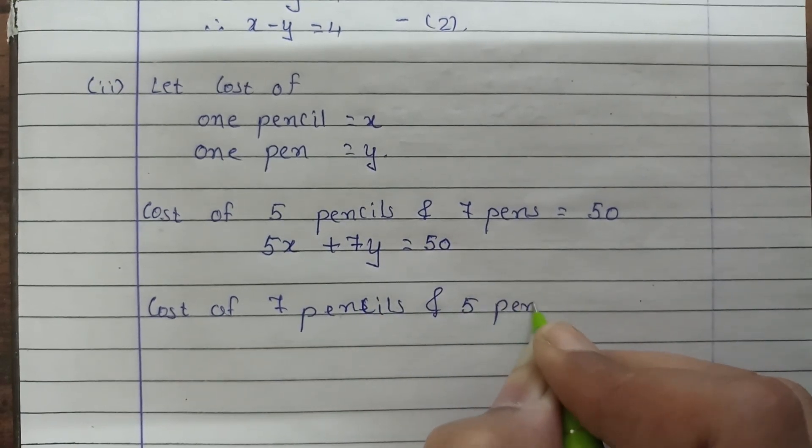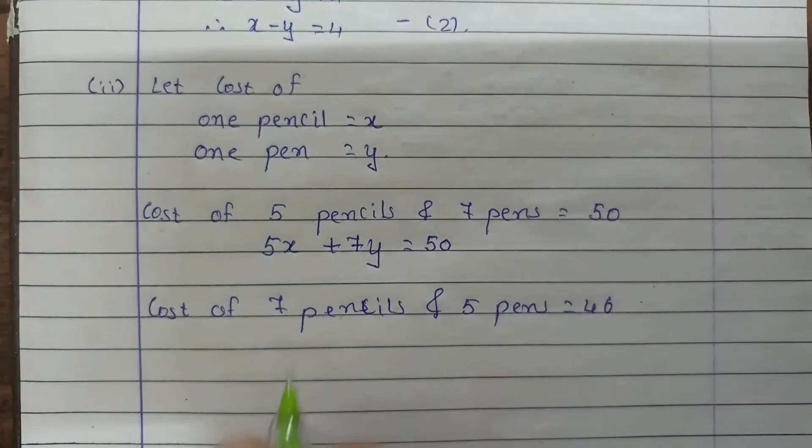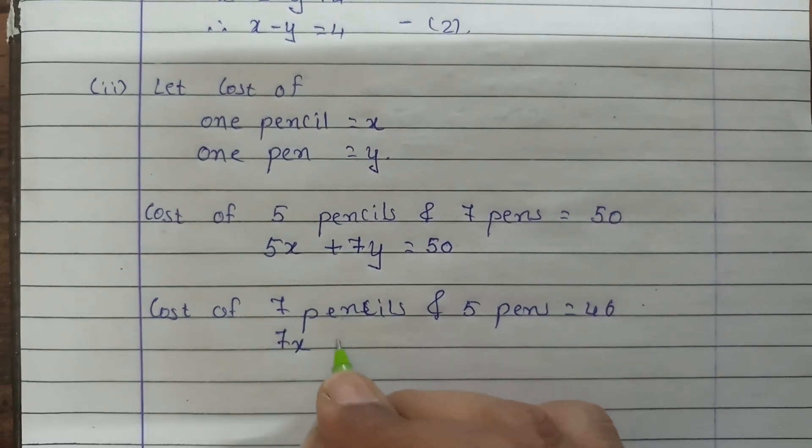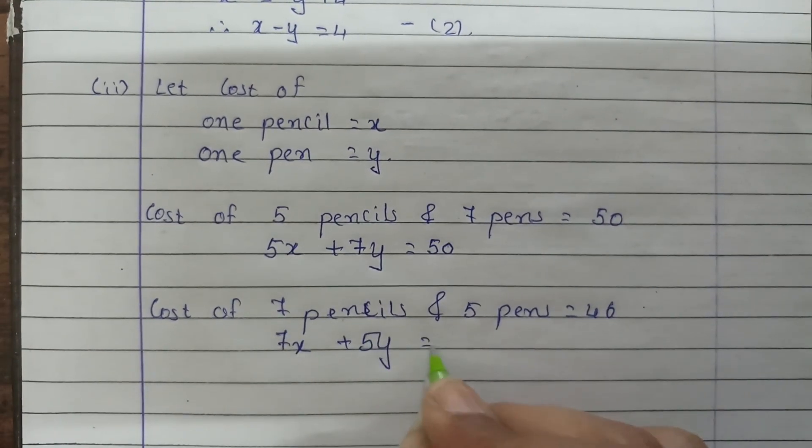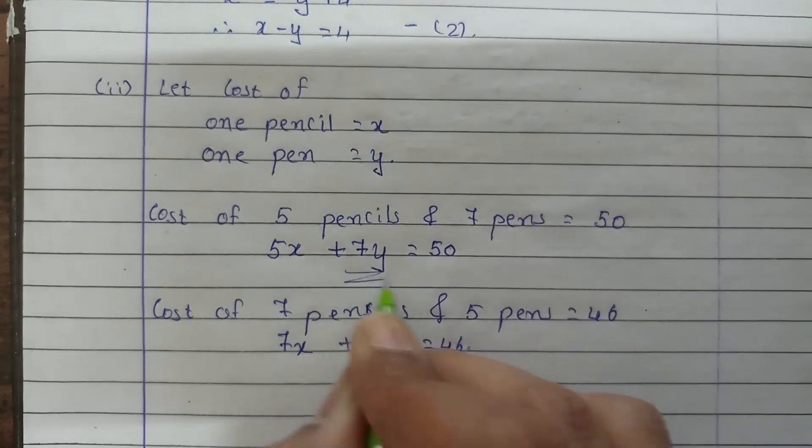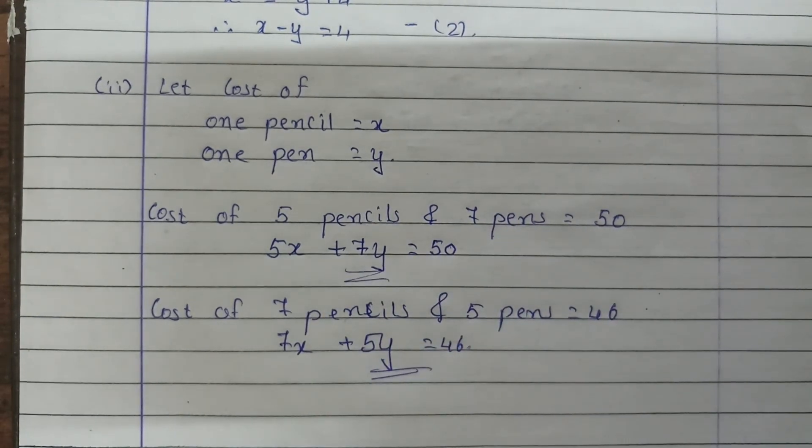In the second condition, 7 pencils and 5 pens cost 46 rupees. That means 7 times x plus 5 times y is equal to 46. So these are our two equations. Clear?